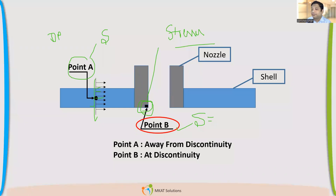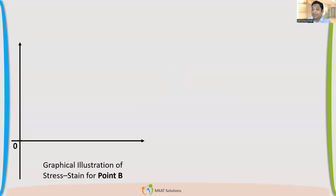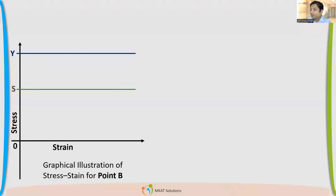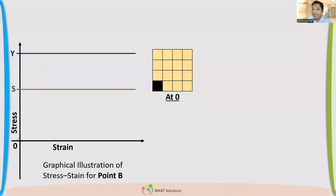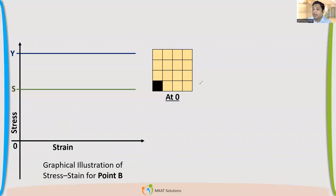Now let us try to draw the stress-strain diagram for point B. We have yield and allowable stress marked. We start at point O. A grid-like structure has been created to denote the deformation — the elongation happening at each point. The black color represents point B, and the other points away from discontinuity are in the elastic zone.